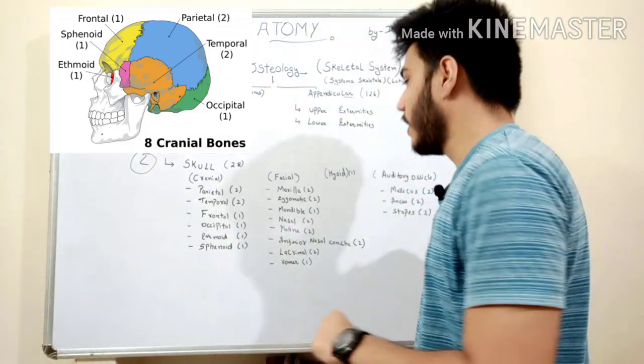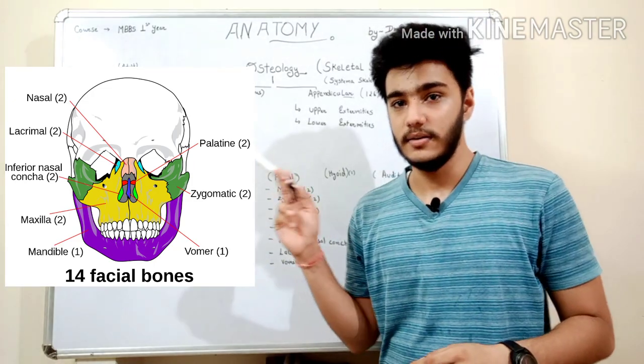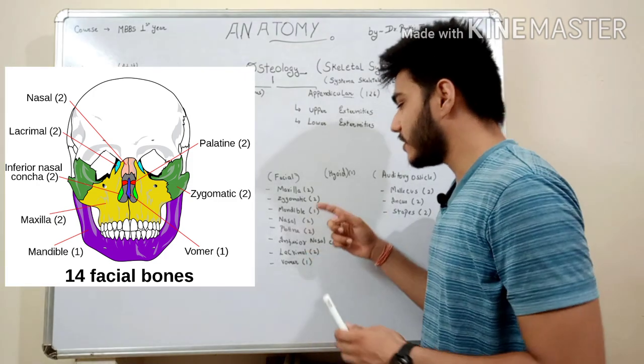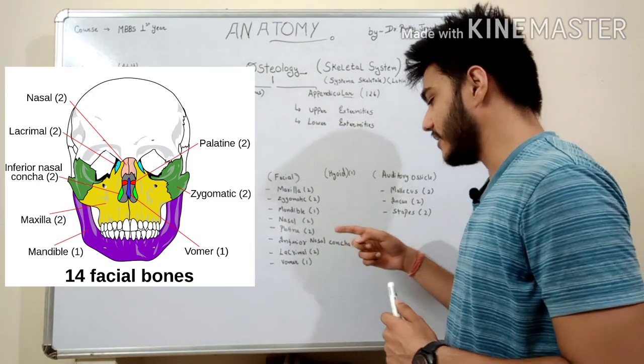And in the other part we can see the facial bones. As you can see in the given diagram on the screen, in facial we can see maxilla, zygomatic, mandible, nasal, palatine, inferior nasal concha, lacrimal, and vomer.